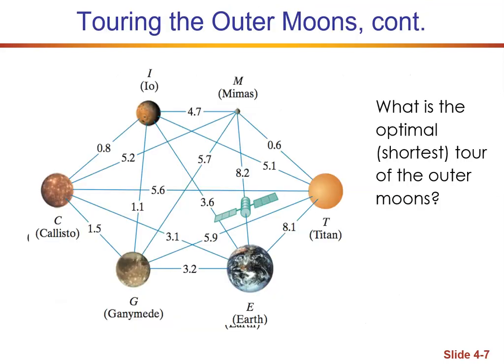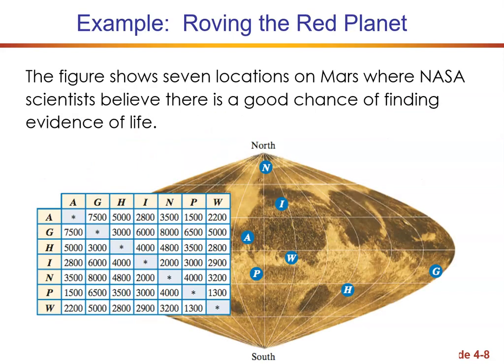This one is talking about time, where the previous one was talking about cost. Again, we're still looking for the most optimal route. Here we're starting with Earth and returning to Earth. We also have this 'roving the red planet' problem. This figure shows seven locations on Mars where NASA scientists believe there is a good chance of finding evidence of life. We have all the different data in a table, and we're going to return to this problem a little bit later.